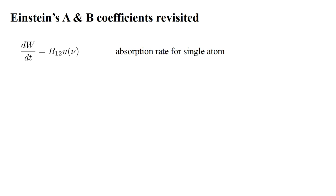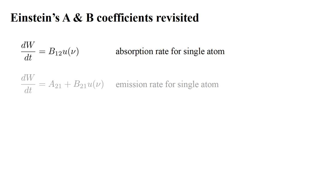We imagine an atom with two energy levels, one and two. We write the absorption rate for a single atom in level one as B-one-two times U of nu. Here nu is the frequency of radiation with energy equal to the difference of the atomic energies, and U is the density of that radiation. The emission rate for a single atom in level two is A-two-one plus B-two-one times U of nu.